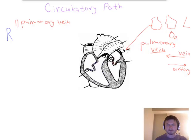From pulmonary vein, it enters the first chamber inside the heart right here. This is the first chamber on the left side and this is your left atrium.